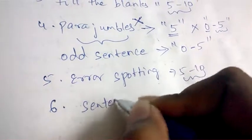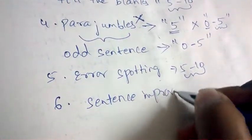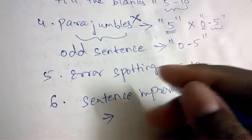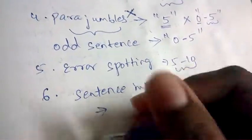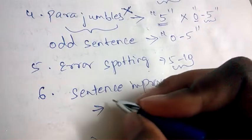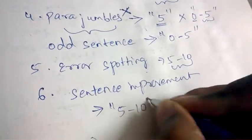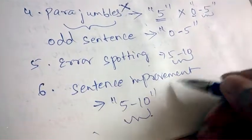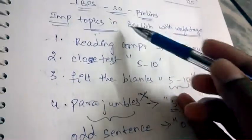The last important topic is Sentence Improvement. They'll give a sentence and we need to improve it by adding a few things to it. Questions from this topic will be asked in the range of 5 to 10 in the exam.